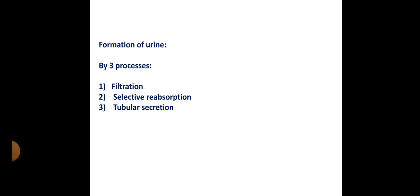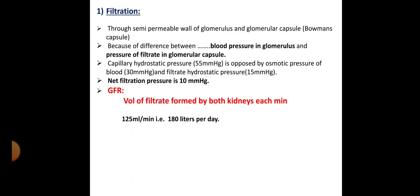Filtration occurs at the Bowman's capsule through the semipermeable wall of the glomerulus, also known as the glomerular capsule or Bowman's capsule. This filtration occurs because of pressure — specifically, because the blood pressure in the glomerulus is on the higher side and the pressure of the filtrate in the glomerular capsule is on the lower side.